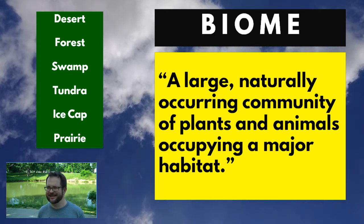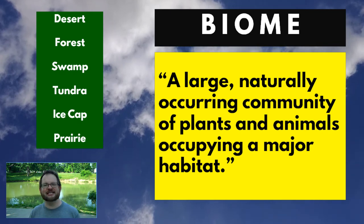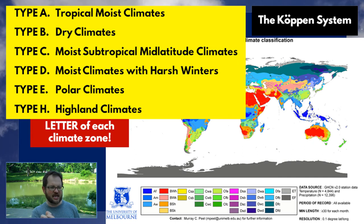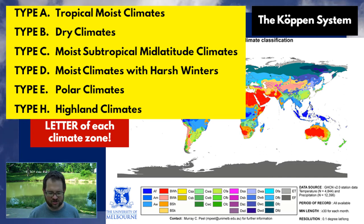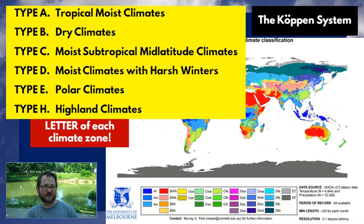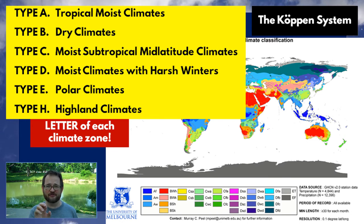The Köppen system is stereotypically German — it breaks down the climate of regions into lots and lots of different categories. When I worked in Germany, I found they really teach a very stamp-collecting-oriented mindset with lots of categories. The full Köppen system actually describes every location on earth in terms of three letters that describe its climate.